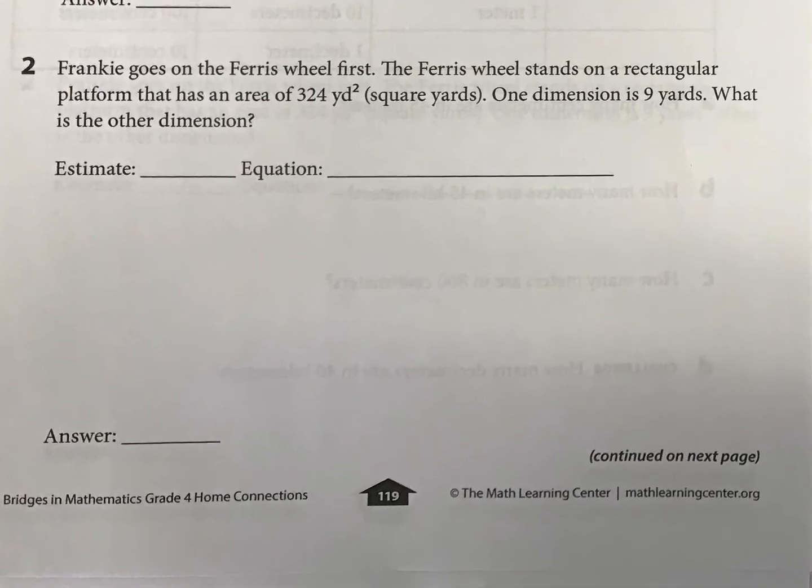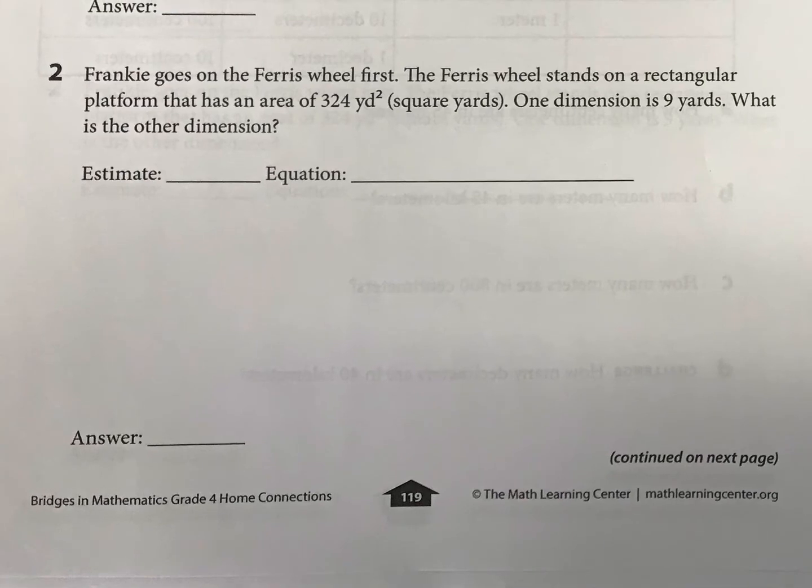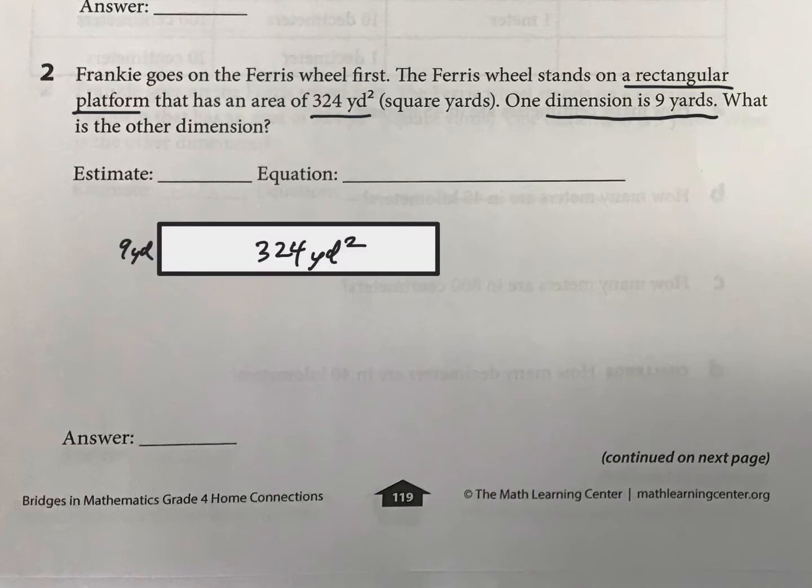Number two, we might spend some more time on this one. So there's a rectangular platform, and that is an area of 324 yards squared, or square yards. One dimension is 9 yards. So basically, we're looking at this. Oh, and I forgot these estimates. So to estimate, first of all, our regular equation is going to be 324 divided by 9. And to estimate, well, if I did 300 divided by 10, it's going to be somewhere around 30, approximately.